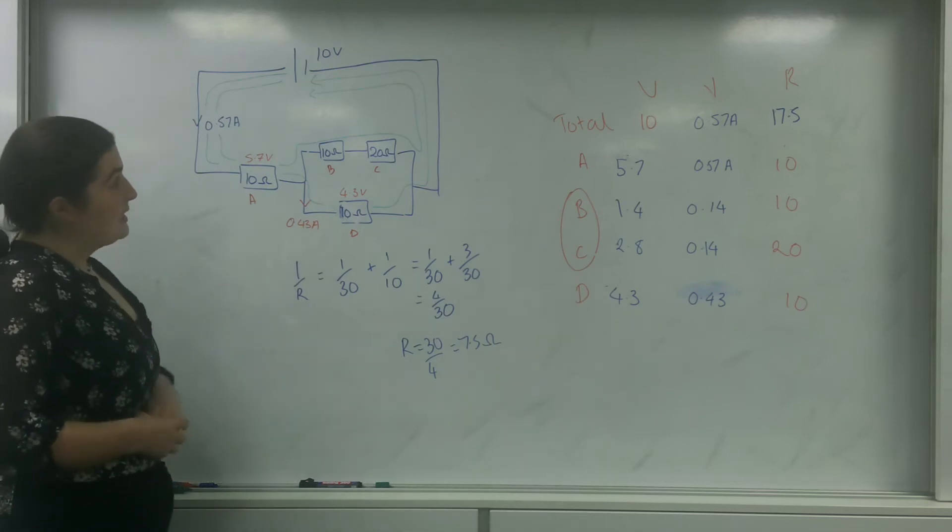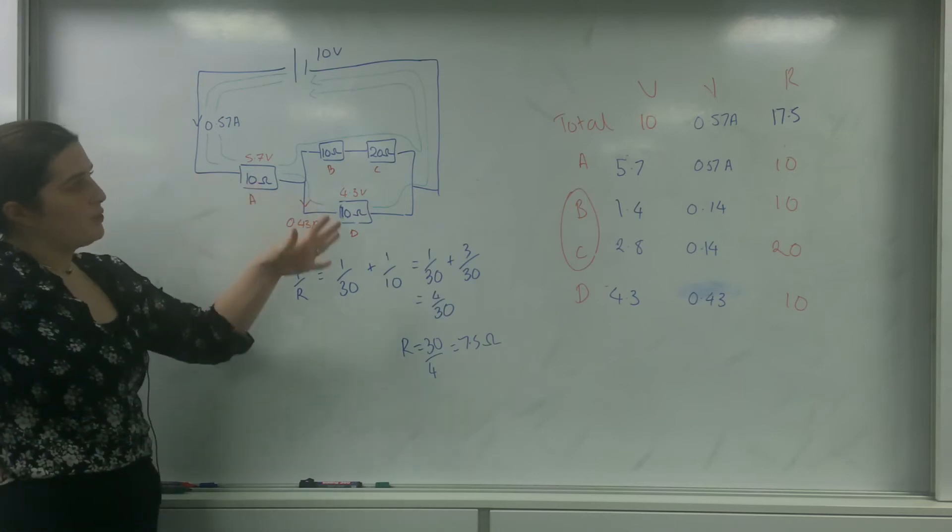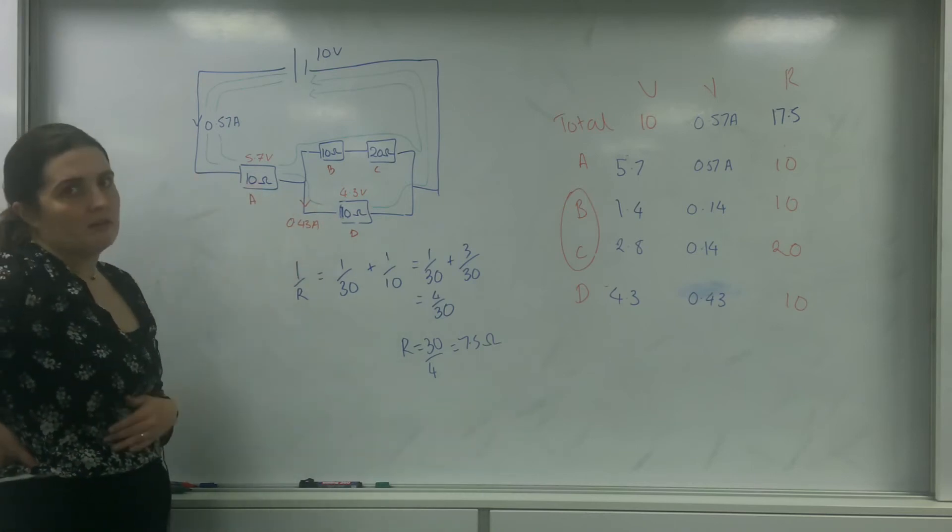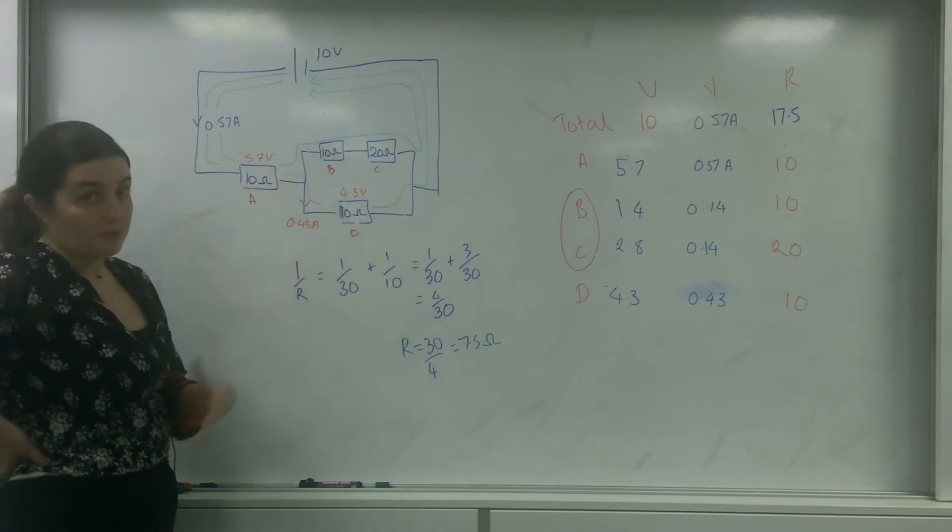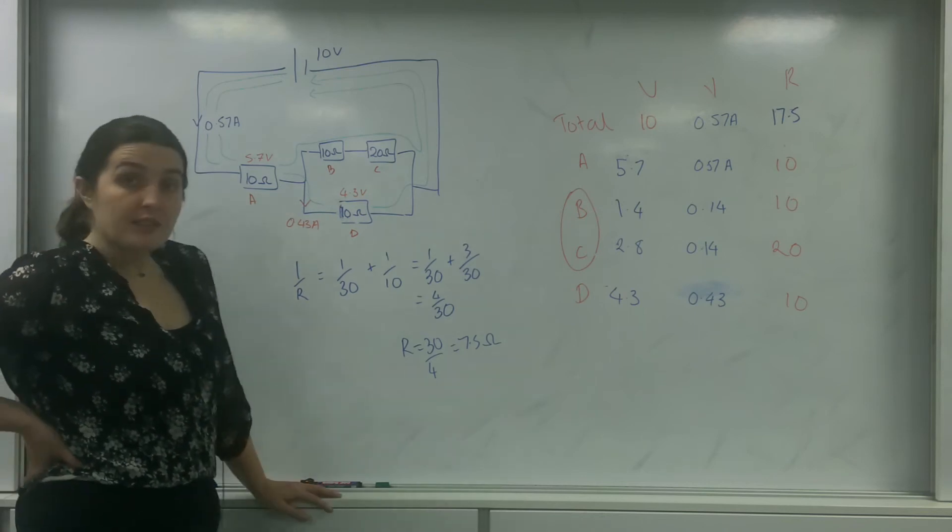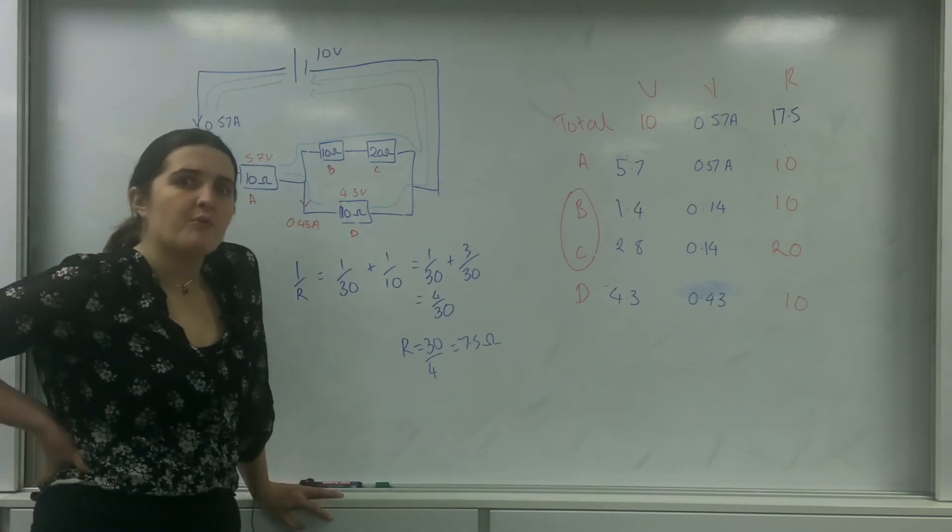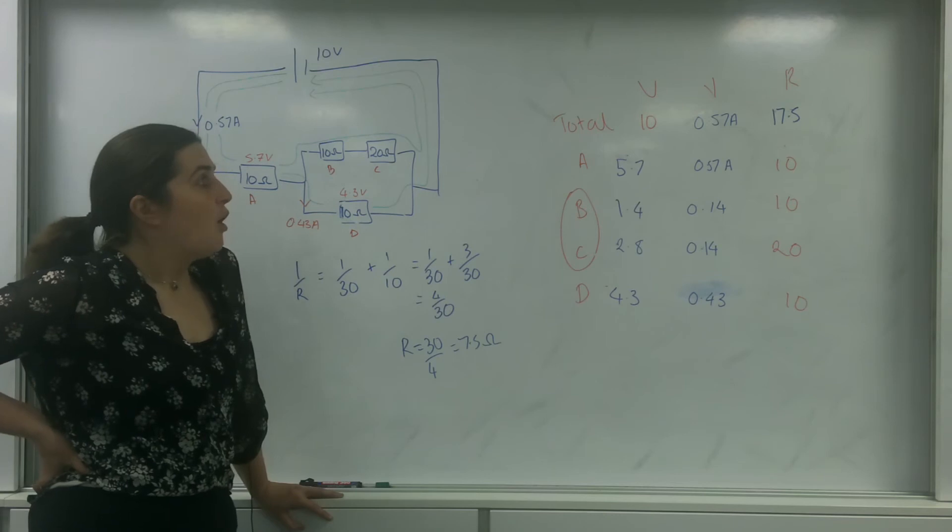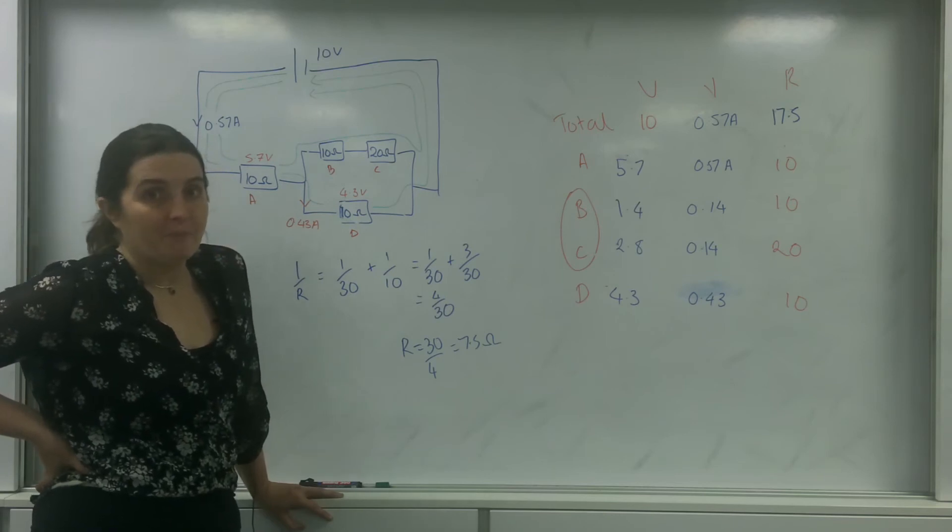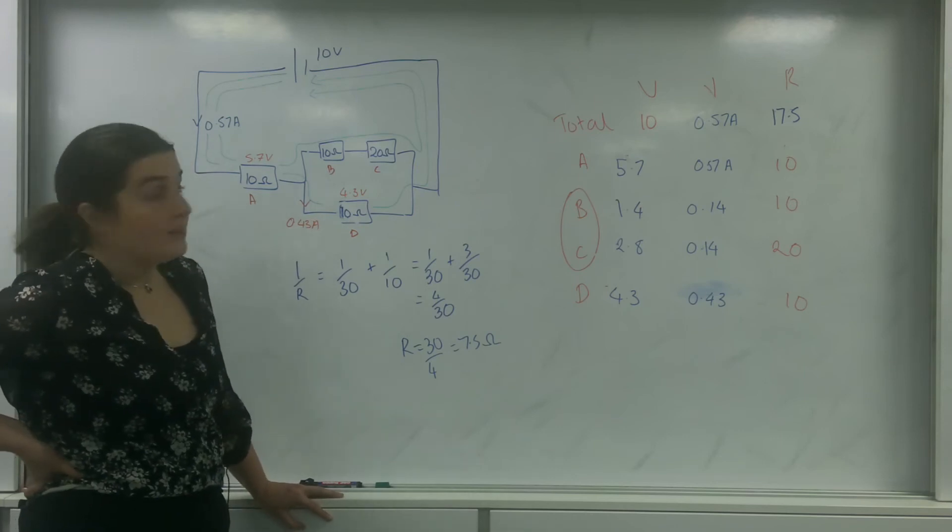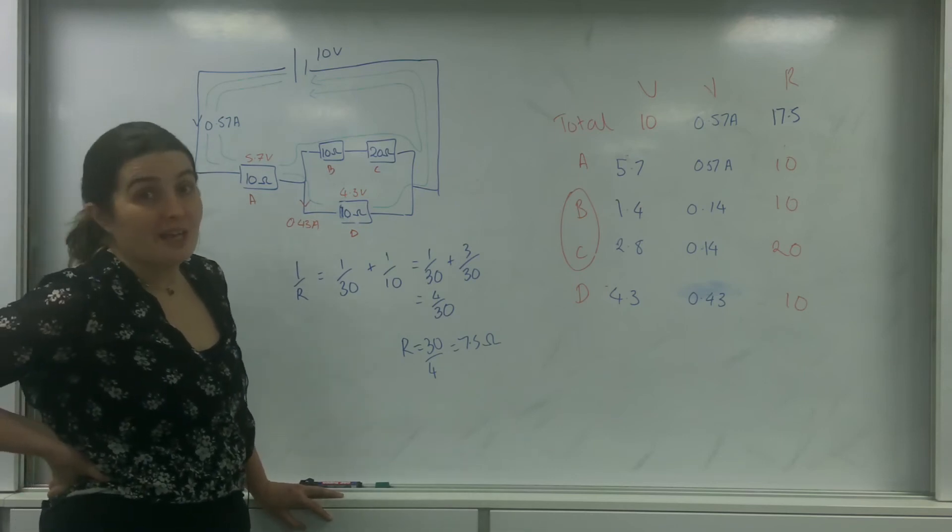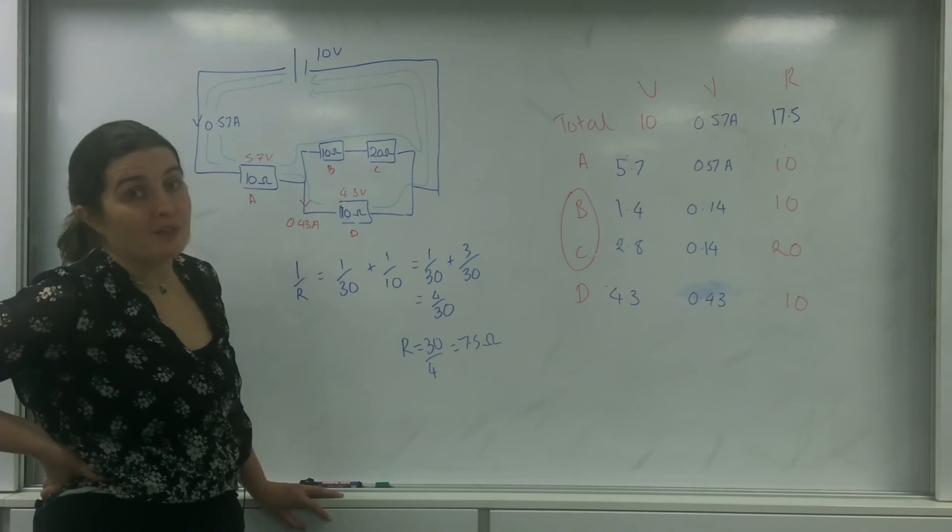But as you can see, by looking at individual objects, I'm able to use V equals IR to be able to identify different parts of the circuit, the current, etc. And using Kirchhoff's law, which are not on the syllabus, are really powerful ways and powerful methods of identifying parts of the circuit. And that is an example of using Kirchhoff's laws and Ohm's laws to be able to solve circuit diagrams.